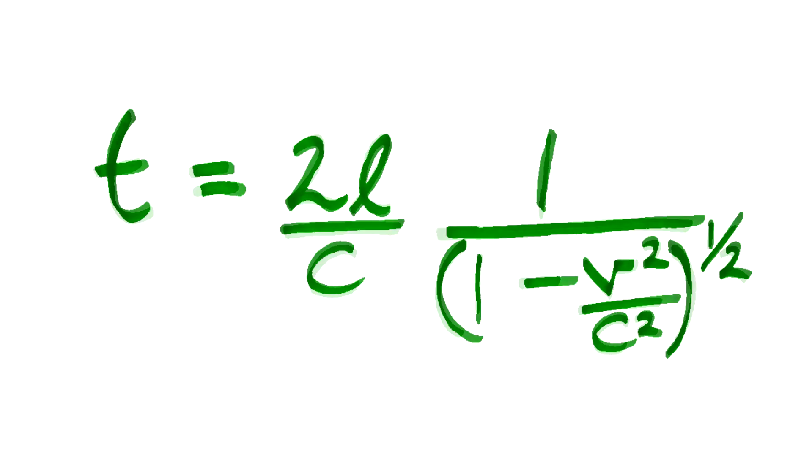In other words, for any moving object, time as perceived on that object is slower than for a stationary object. We can see exactly how much slower, and we find that most of the time it makes near as damn it no difference — because we're dividing the speed of our object, in this case the train, by the speed of light squared. The speed of light is a really large number, so the factor we multiply our original unit of time by is almost exactly 1. But if we allow v to get really close to the speed of light, this factor gets very large. This process is real, it has been observed, and scientifically proven by experiments — but in everyday life, because we don't move anywhere near the speed of light, we just don't notice it.